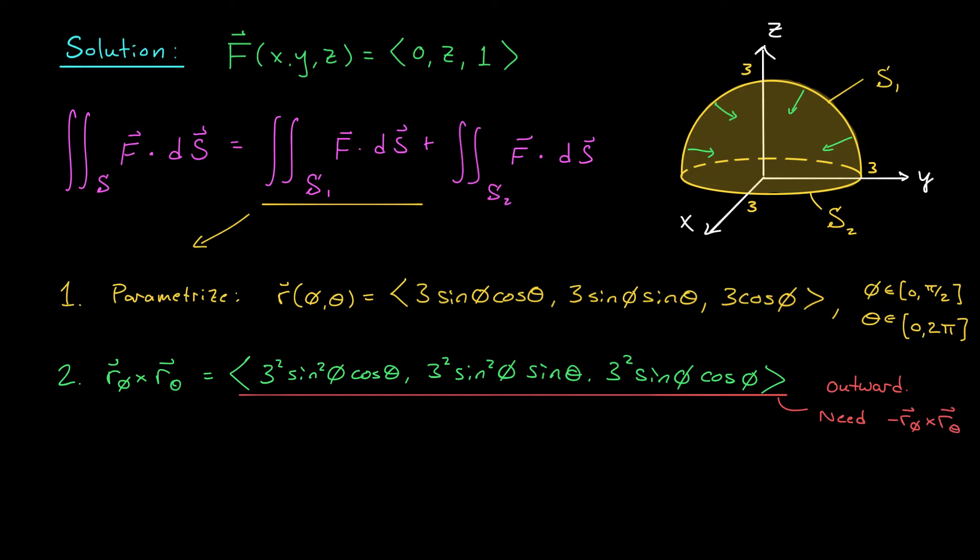That's step two. In step three, we're going to set up and evaluate our surface integral. So the surface integral of F over S₁ is, according to our formula, the double integral over D, the set of all possible values of our parameters, of F · (−R_φ × R_θ) dA. On the next slide, we'll wrap up these calculations by expanding this dot product and figuring out the bounds of our integrals.